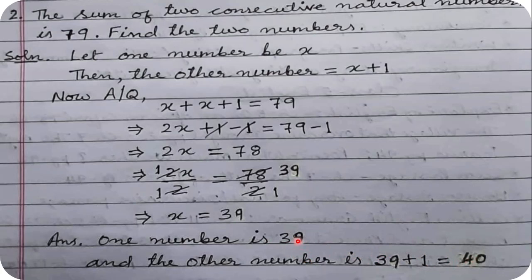Hence the two numbers are 39 and 40. We can verify: 39 + 40 = 79, and that is what the statement says — the sum of two consecutive natural numbers is 79. So we found the two numbers.